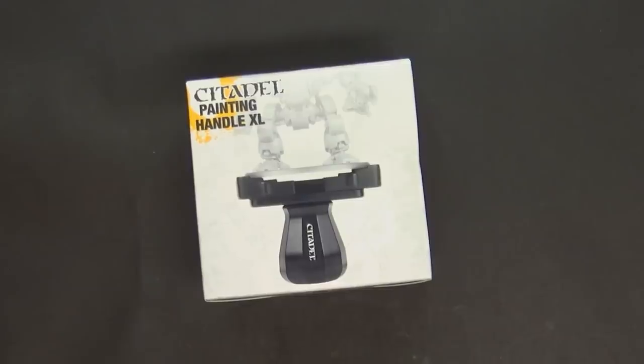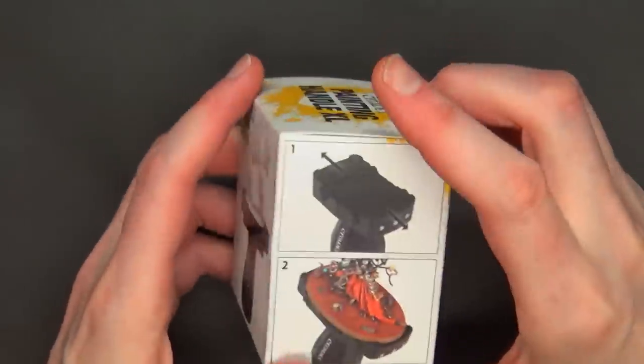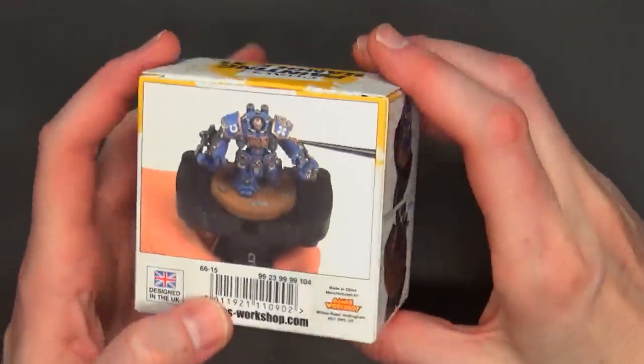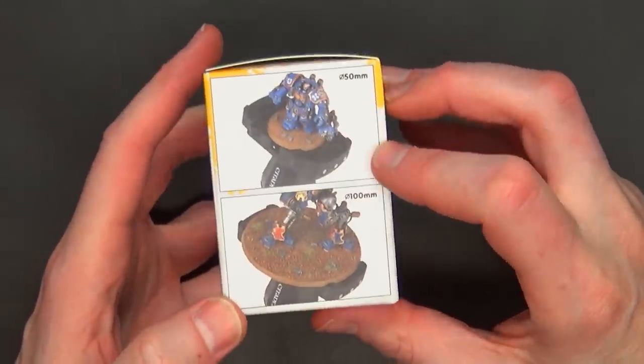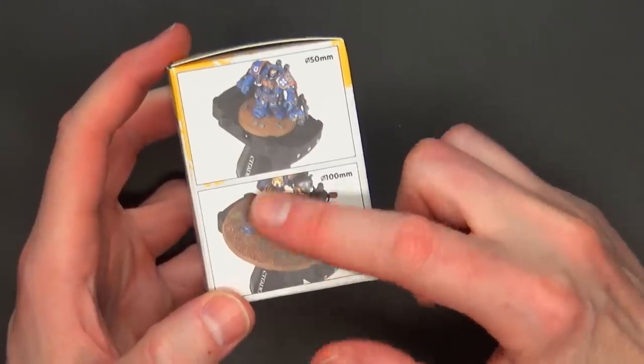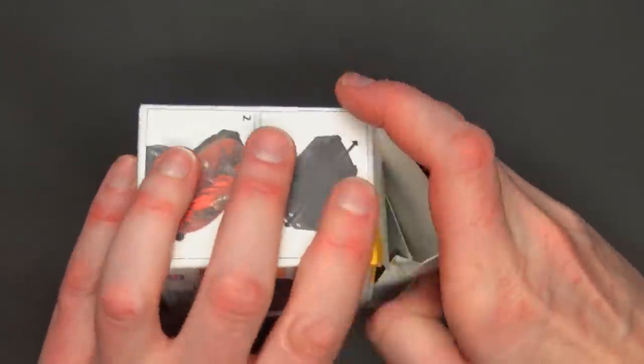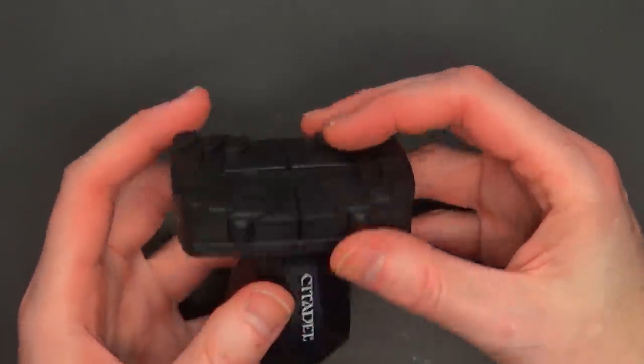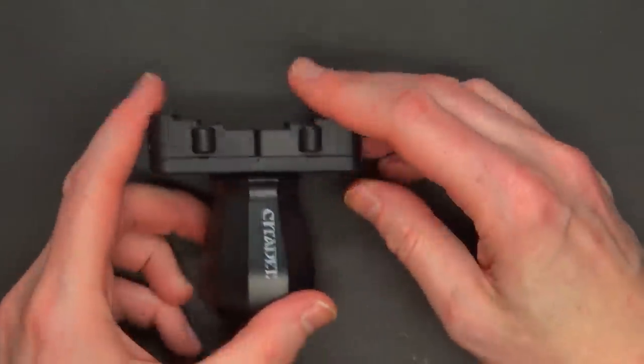First up, the new XL painting handle, wider and girthier. This bad boy can hold bigger models, supposedly 50mm, 60mm, up to 100mm round, although I wasn't able to get my Armiger on there. As you're about to see, it's a little difficult to get this thing open. It's kind of almost like a skill challenge to get everything on here.